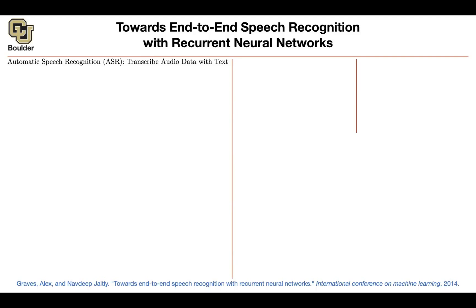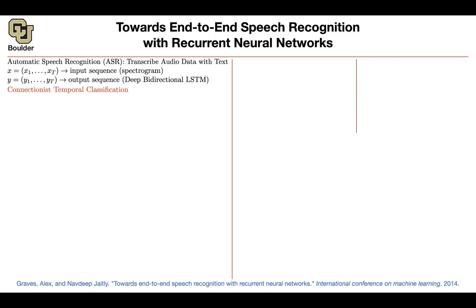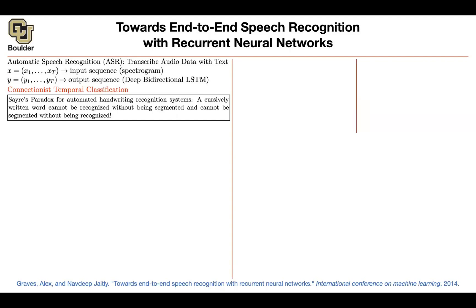We want to transcribe audio data with text. That's your input sequence in the form of a spectrogram. A bidirectional LSTM is going to give you an output sequence. We are going to need to use connectionist temporal classification loss because of the following observation, which is made for handwriting recognition systems. Handwriting recognition systems are very similar to speech — the input is misaligned with the output.